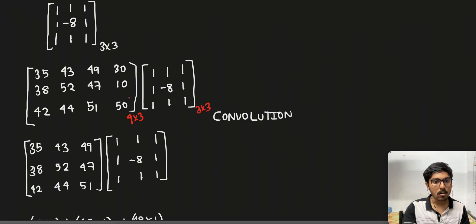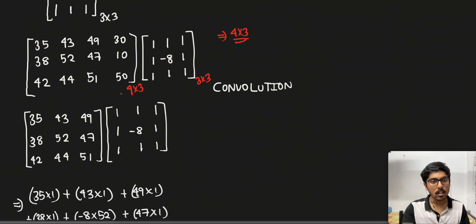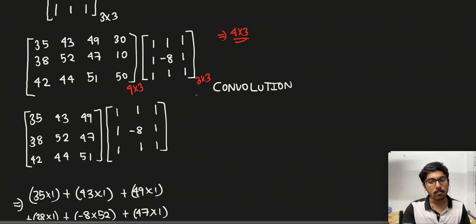So according to the matrix rules of multiplication, the resultant matrix will be 4x3 and hence this is a valid operation. Now we will perform the convolution step on this particular image data.